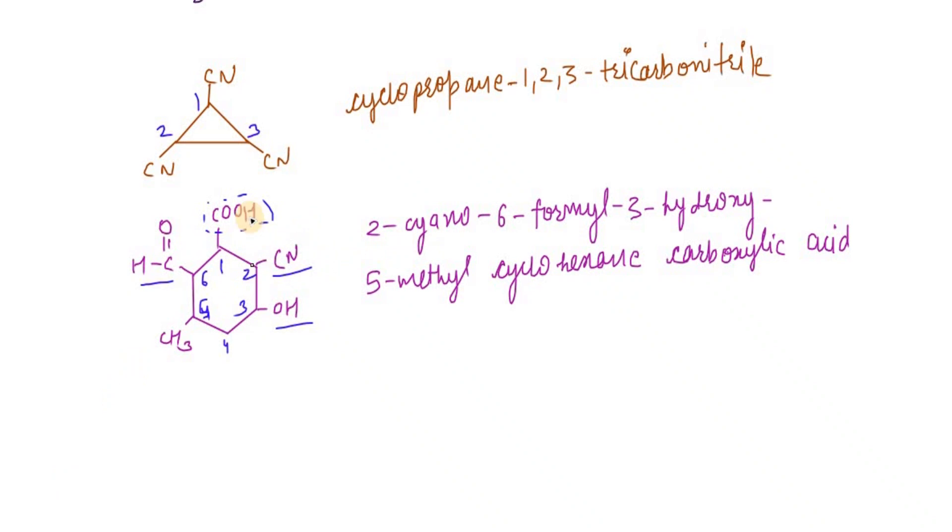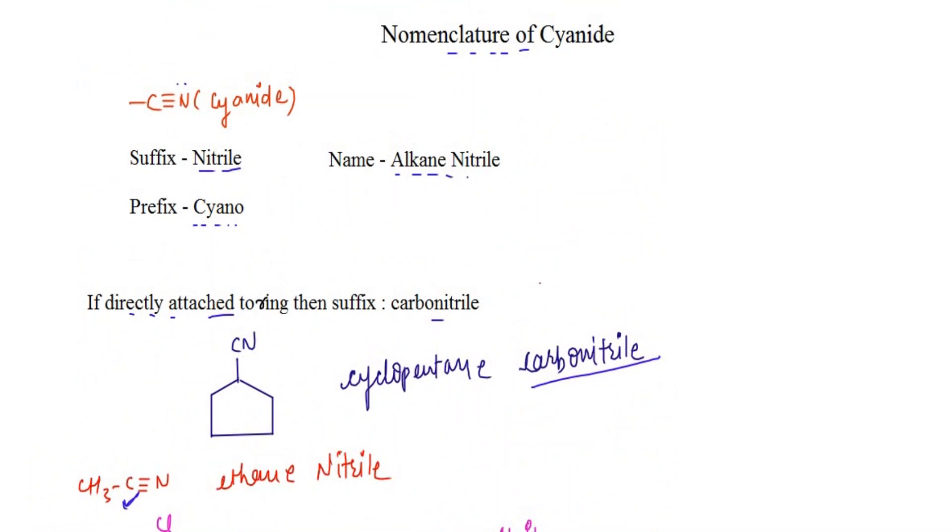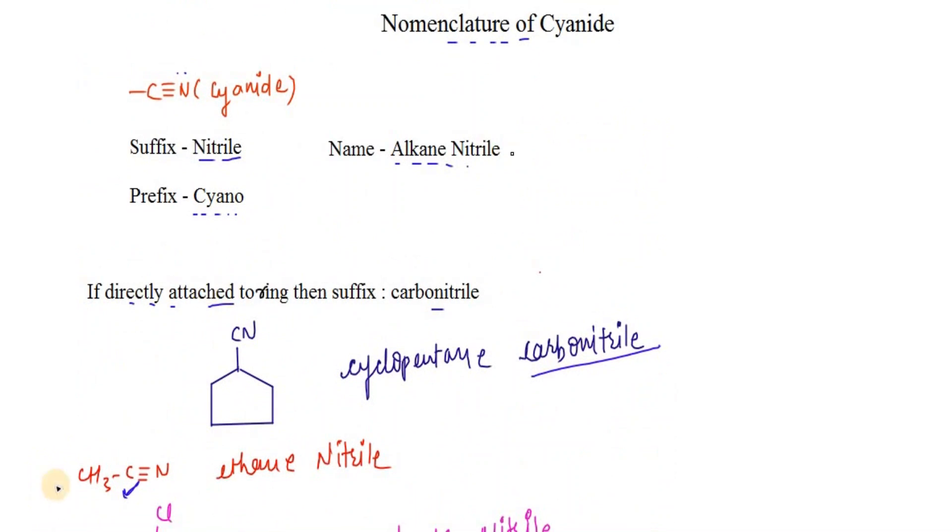We know how to number. We have to look at the functional group list. We know that between an aldehyde and cyanide, cyanide comes prior. So 1, 2: 2-cyano, 6-formyl. And how do we arrange them? We arrange them in alphabetical order. That's how we name when there are more than one functional group, and that's how we name when it comes to the naming of a cyanide.